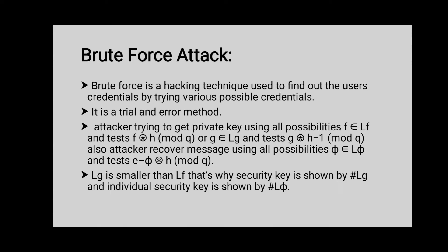In mathematical terms, an attacker tries to get the private key using all possibilities — if F belongs to LF, testing F*H mod Q; or if G belongs to LG, testing G*H_inverse*F*H mod Q. An attacker can also recover a message using all possibilities where phi belongs to L5 and testing E minus phi*H mod Q. Since LG is smaller than LF, the security is shown by the size of LG, and individual message security is shown by the size of L5.